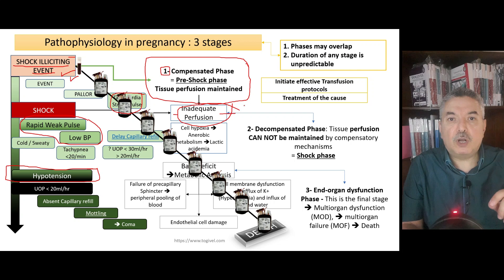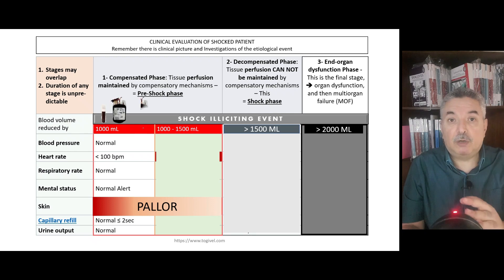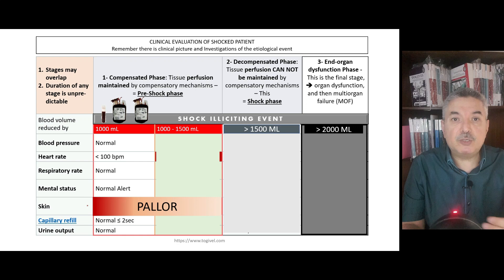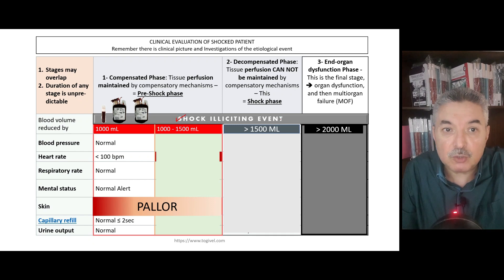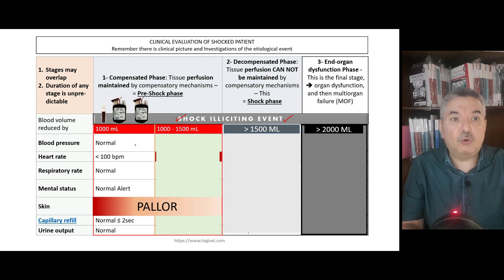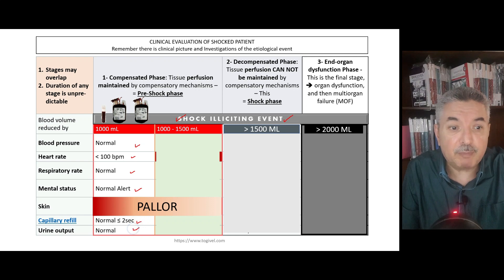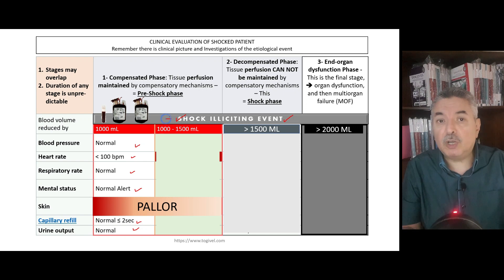From now on, diagnose shock when there is a shock enlisting event. In the early compensated phase, when the patient has lost up to one liter of blood, there will be no changes in vital signs — no tachycardia, no reduced blood pressure, maybe some pallor — but the one thing that is always present is the shock enlisting event. Presence of the shock enlisting event marks the start of shock, even with a normal blood pressure, heart rate, respiratory rate, mental status, skin, capillary refill, and urine output.